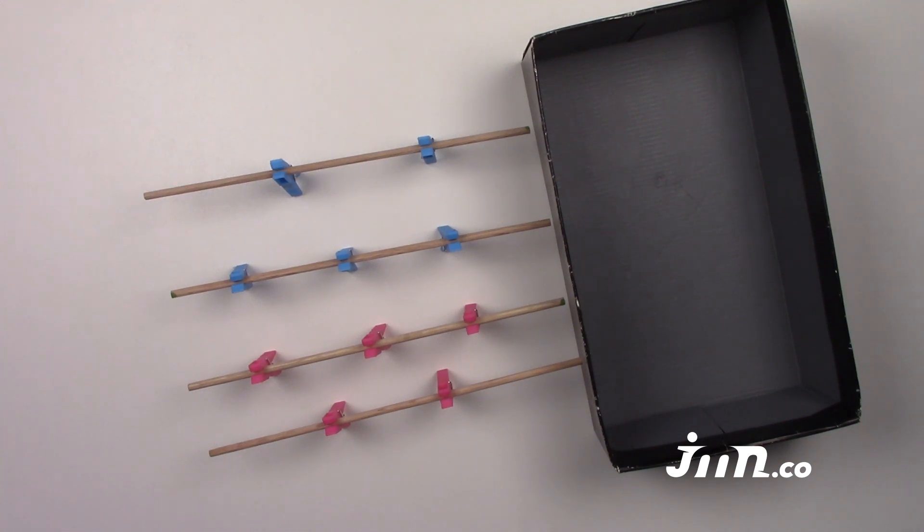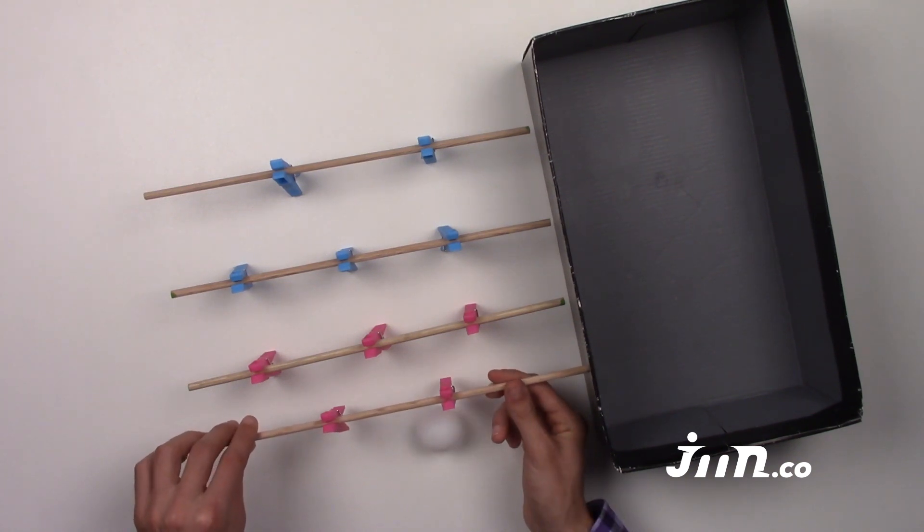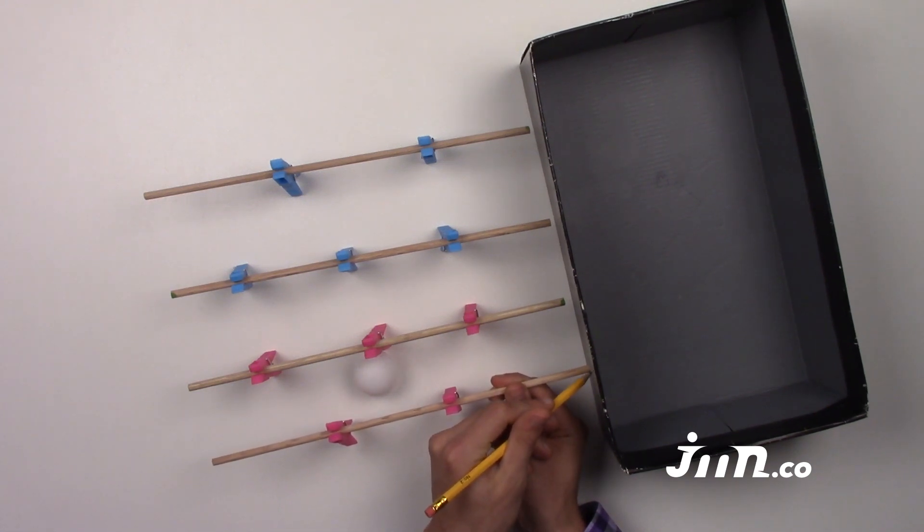Step 3: Place the ping pong ball next to one of the clothespins. Lift one of the sticks up so the clothespins will be able to swing back and forth and hit the ball. Step 4: Mark a line at the height the sticks should be.